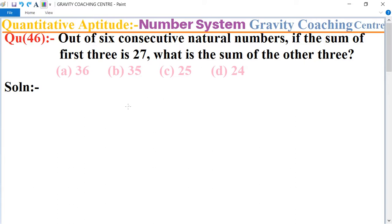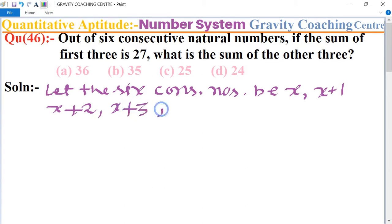In this question, there are six consecutive natural numbers. So first we let the six consecutive numbers be x, x+1, x+2, x+3, x+4, and x+5.